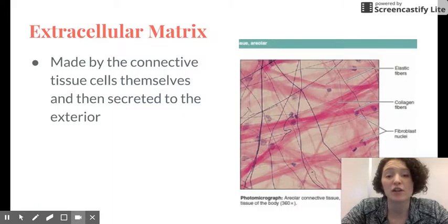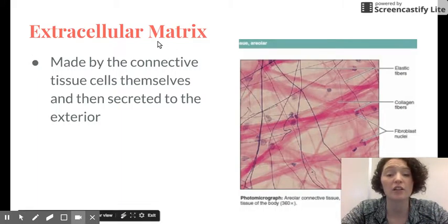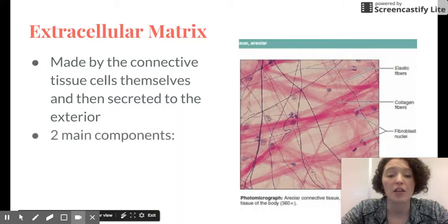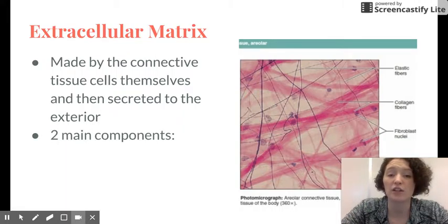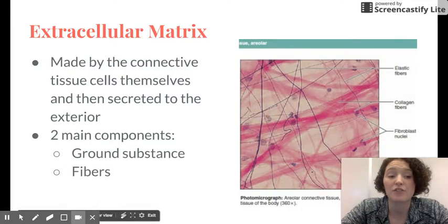The extracellular matrix in this case is actually made by the connective tissue cells themselves and then secreted to their exterior. Extracellular literally means outside of the cell. There's two main components to the extracellular matrix. The first is ground substance and the second one is fibers.